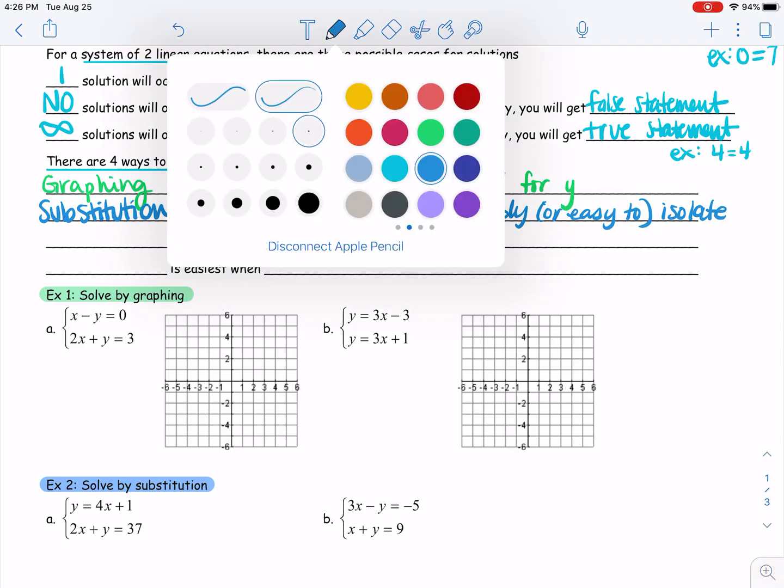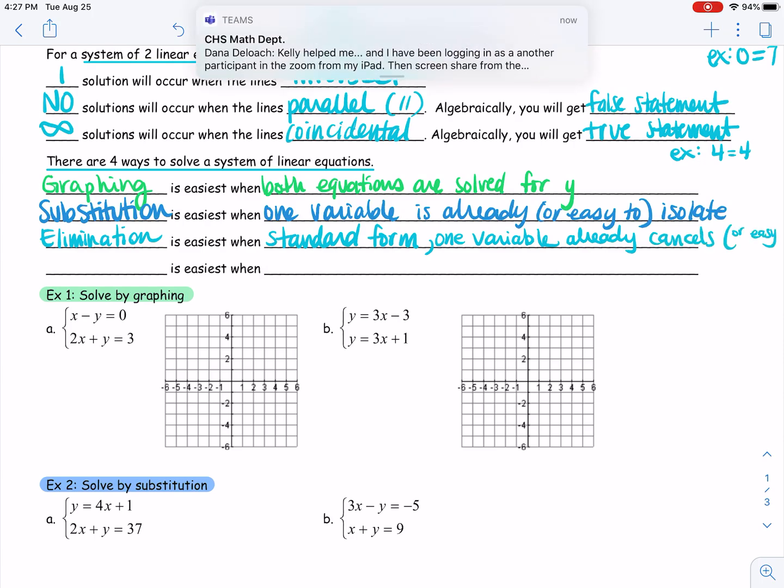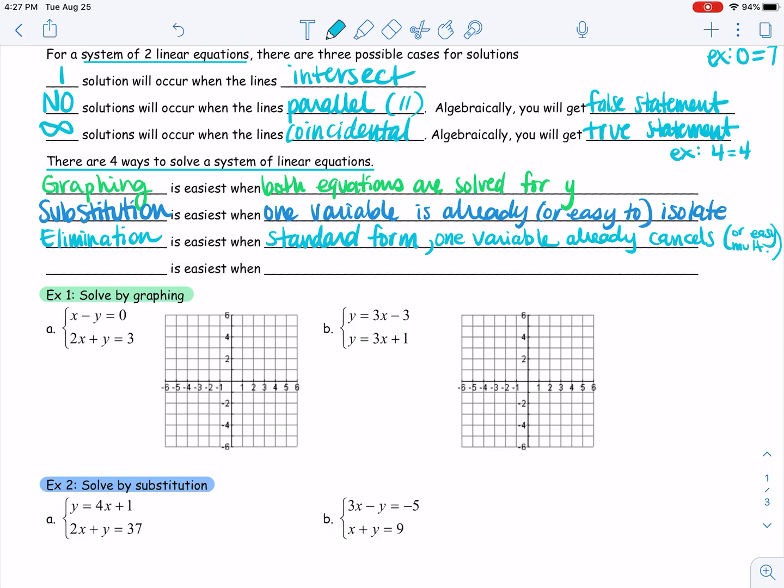There's a third one that most of you know, and that is elimination. Elimination is easiest when we're in standard form or when one of our variables are already going to cancel out or it's an easy cancel if I multiply one of my equations by a negative one or by two or something like that. It's easiest when it's in standard form. Remember standard form ax plus by equals c.